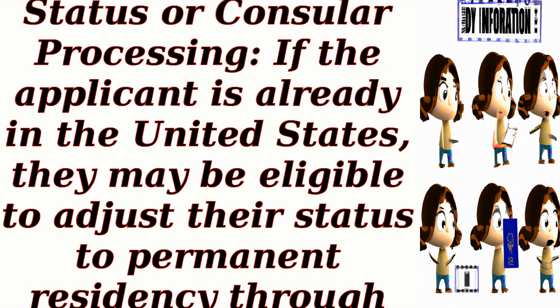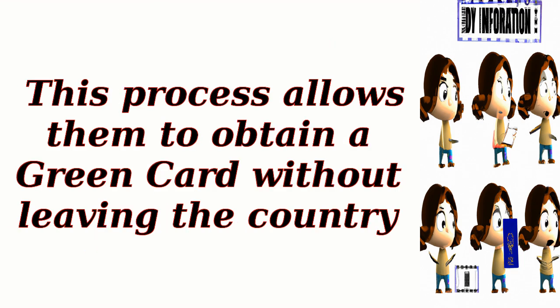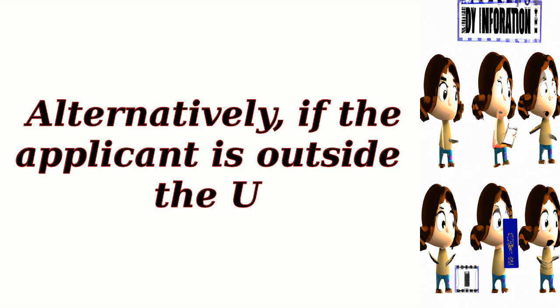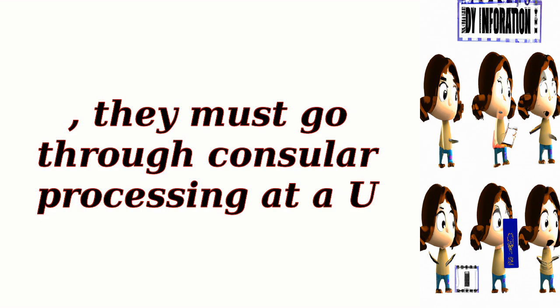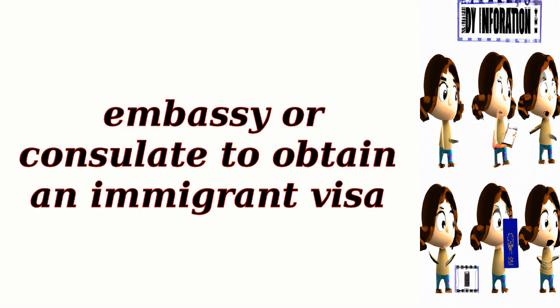Adjustment of status or consular processing: if the applicant is already in the United States, they may be eligible to adjust their status to permanent residency through Form I-485. This process allows them to obtain a green card without leaving the country. Alternatively, if the applicant is outside the U.S., they must go through consular processing at a U.S. embassy or consulate to obtain an immigrant visa.